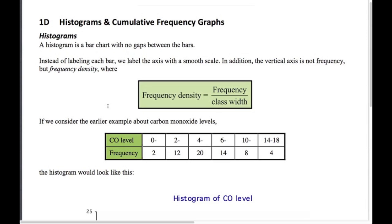The formula is: frequency density equals frequency divided by the class width. This is very important. Going back to the example we've been using in the other videos about carbon monoxide levels over a number of days — if we draw the histogram using raw frequency, this is what we get.